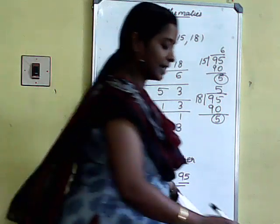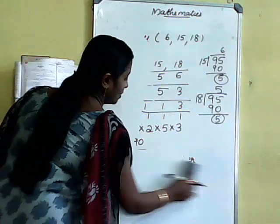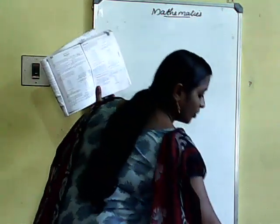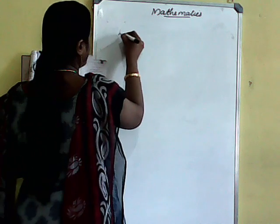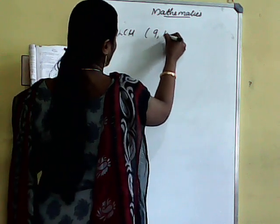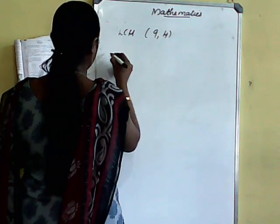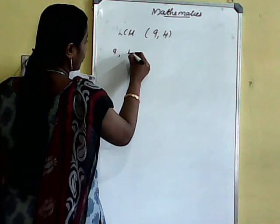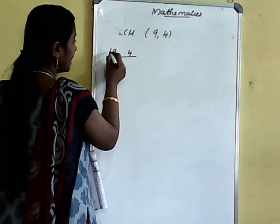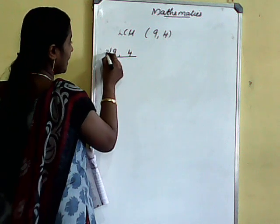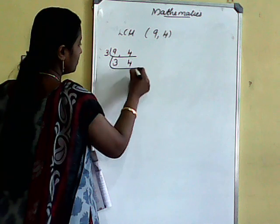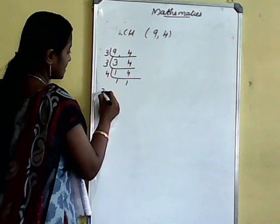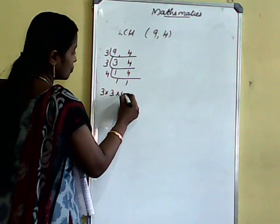10th problem: Find the LCM of 9 and 4. Dividing: 3 goes into 9 three times, into 4 once — then 3, 1, and 4, 1. LCM = 3 × 3 × 4 = 36.